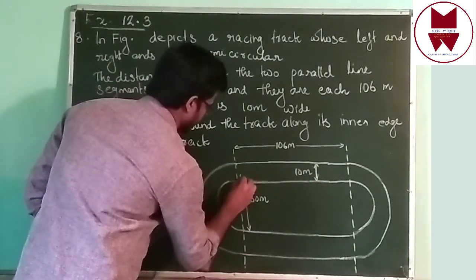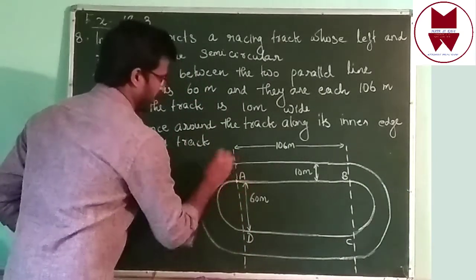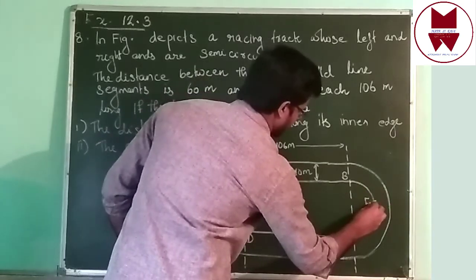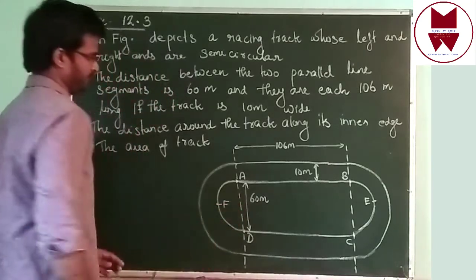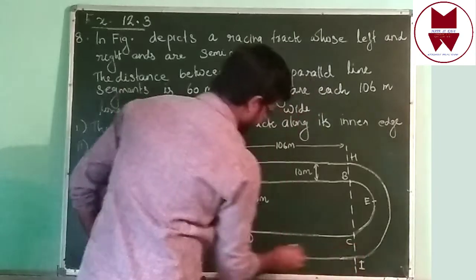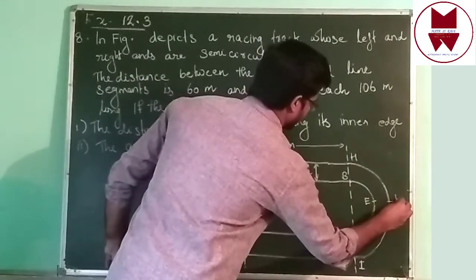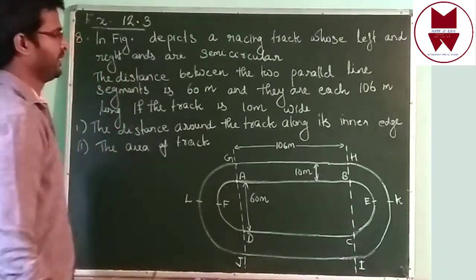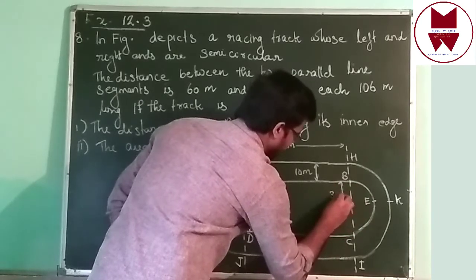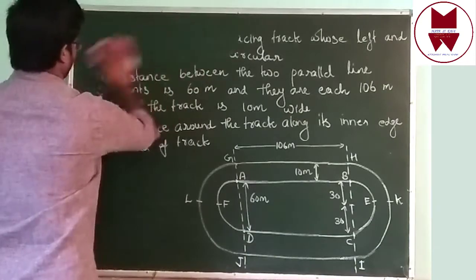We can give names to the points. This point is A, then B, C, D. For the semi-circles, give names E, F on the right side and G, H, I, J, K, L on the figure. This 60 meters — the center half will be 30, upside 30, downside also 30, total 60. I divide it 30 and 30. Now our figure is finished. From this figure, we can find out everything.